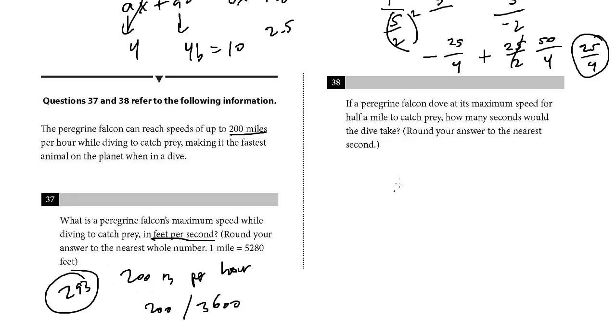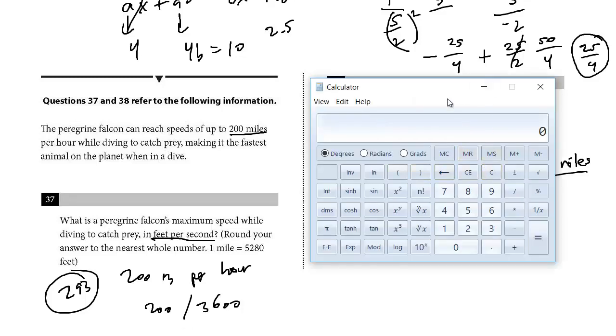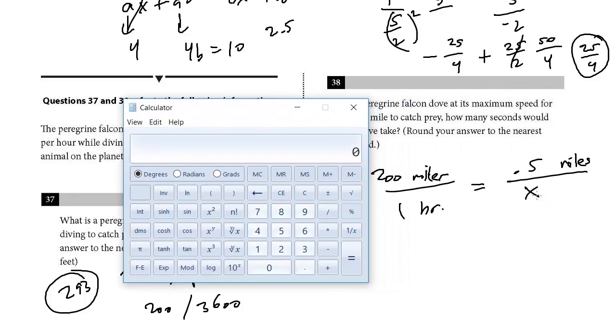Last question. Number 38. If the peregrine falcon dove at its maximum speed for half a mile to catch prey, how many seconds would the dive take? So we're told here 200 miles per hour. I'm going to set up a ratio. So this is going to be for one hour. When you do this to cross multiply, just make sure you're consistent on both sides. So we've got miles on top and on the bottom we've got an hour. And so half a mile, this is going to be 0.5. Remember, this is miles. And this is x. Now we just cross multiply.